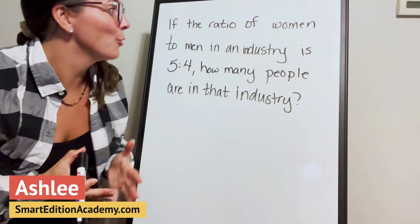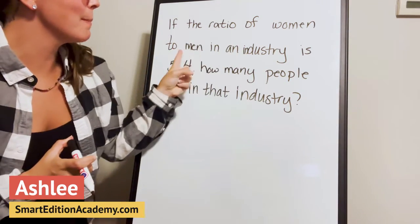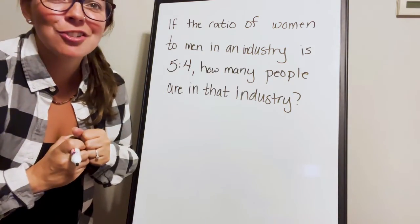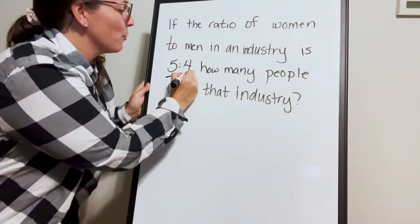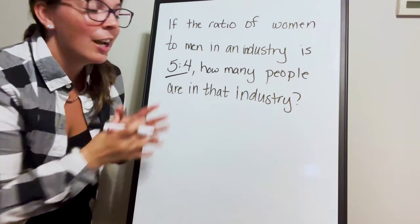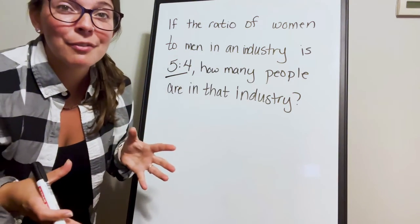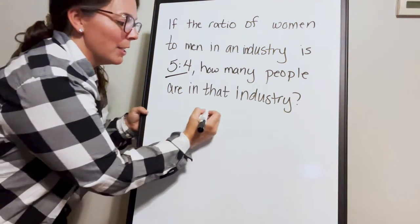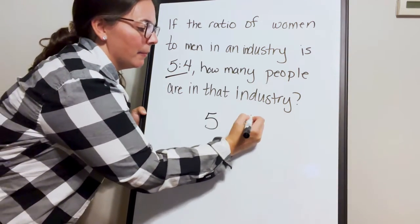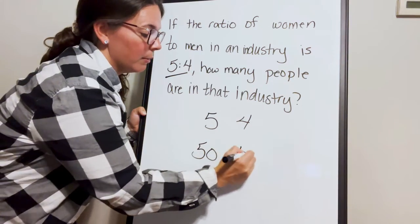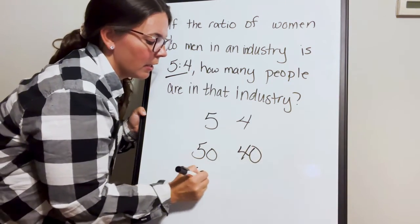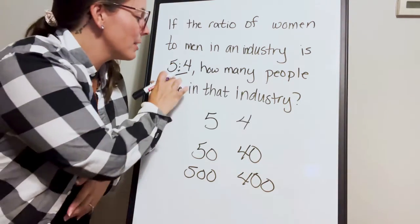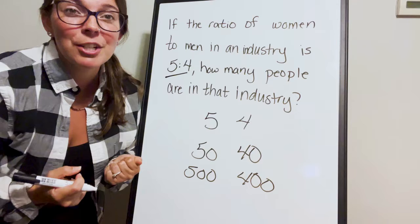Here's an important example for ratio. If the ratio of women to men in an industry is 5 to 4, how many people are in the industry? With a question like this, we do not have enough information. The ratio is 5 to 4. That means there could be 5 men and 4 women, but there could also be 50 men and 40 women or 500 men and 400 women. All of those would simplify to the same ratio of 5 to 4.